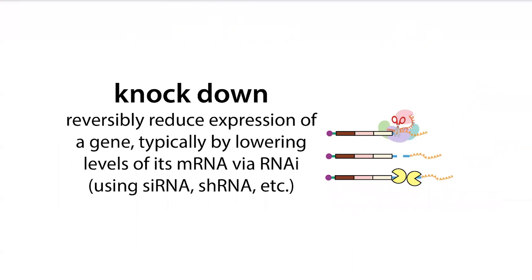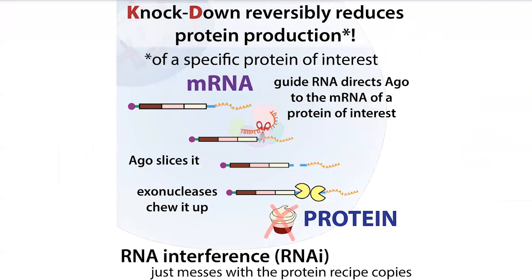There's also knockdown — knockdown is totally different. This is done inside cells. We're basically trying to temporarily reduce the expression of a gene, typically by lowering the levels of its messenger RNA via RNA interference, using siRNA or shRNA. The instructions for making a protein are in a gene; messenger RNA copies get made, and those copies are used by ribosomes to make the protein. If you reduce messenger RNA levels, you reduce protein levels.